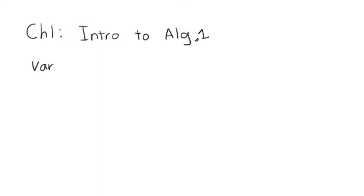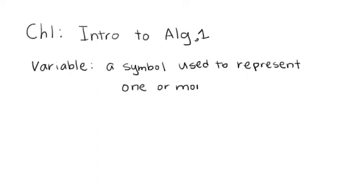So let's define variable. According to our textbook, a variable is a symbol used to represent one or more numbers. This is the most important thing that you're going to learn in chapter one.